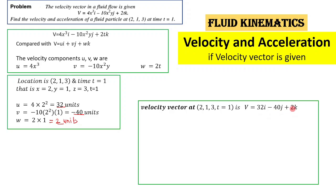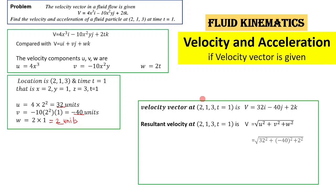The resultant velocity magnitude is found as the square root of u squared plus v squared plus w squared at the point (2, 1, 3) at t = 1. Putting in those values, we ultimately get the velocity as 51.26 units.